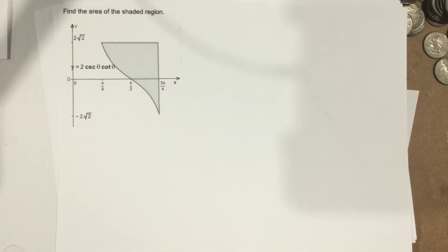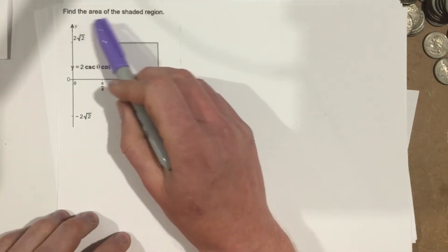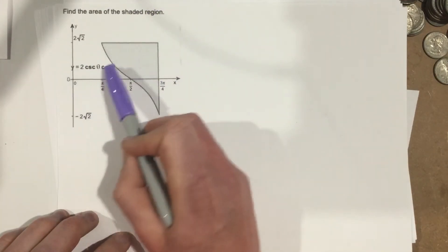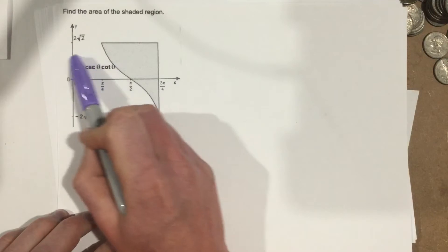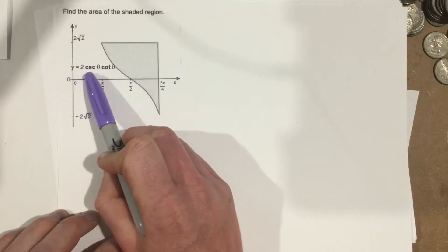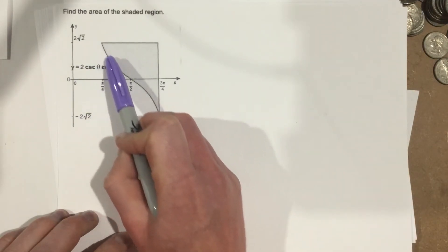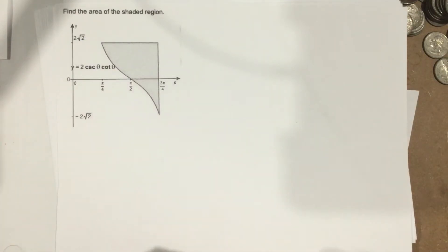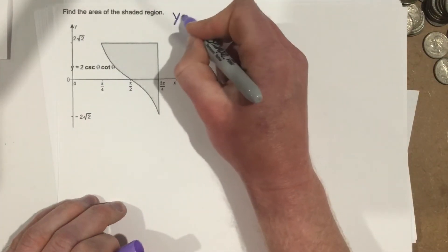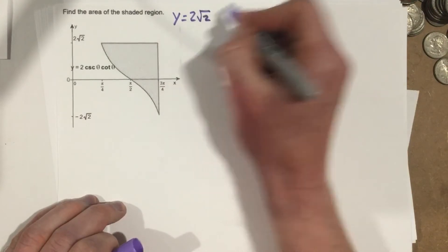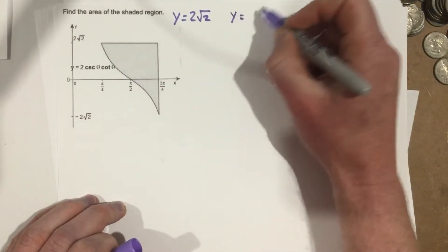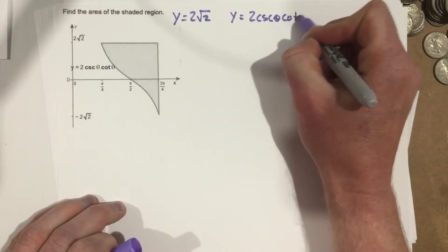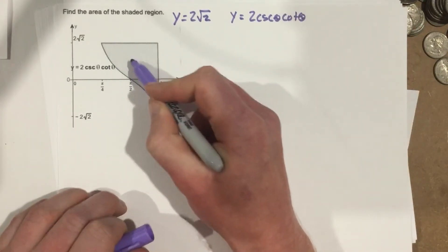This is problem number 2 from assessment number 6. It says find the area of the shaded region. They give you one equation, y equals 2 cosecant theta cotangent theta, and then they give you another equation, y equals 2 root 2. We have these two equations and they want to find the area between the two curves.